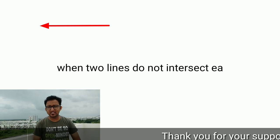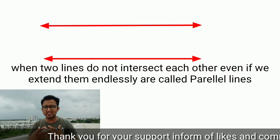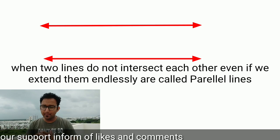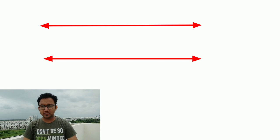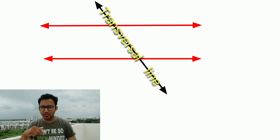When two lines do not intersect each other, even if we extend them endlessly, they are called parallel lines. But if two lines are parallel and one line crosses both lines at two different points, what are these called? These are called transversal lines.